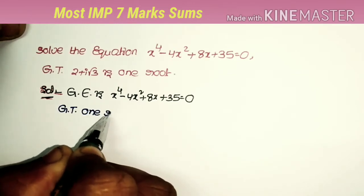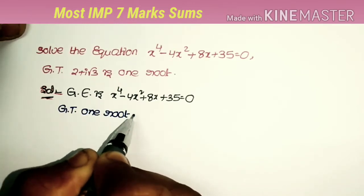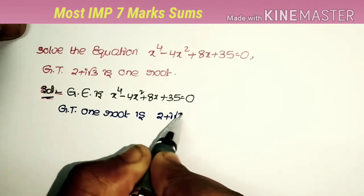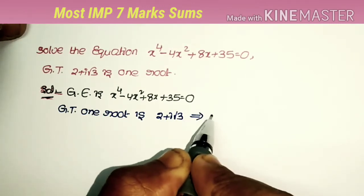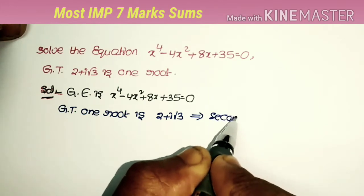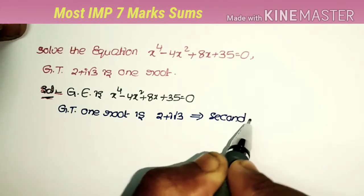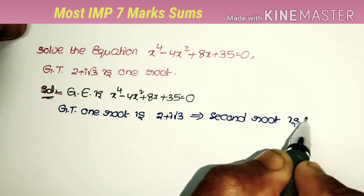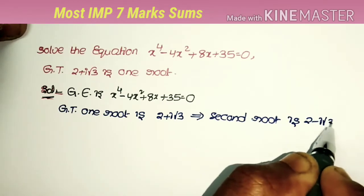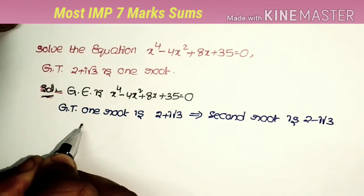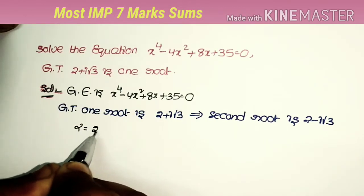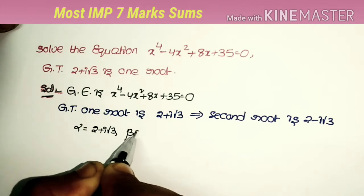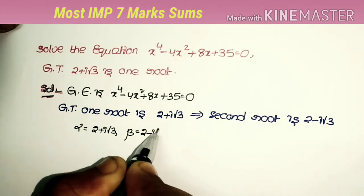Since one root is 2 + i√3, the second root is its conjugate, 2 - i√3, because the conjugate of a complex root is also a root of the equation. We take alpha = 2 + i√3 and beta = 2 - i√3.